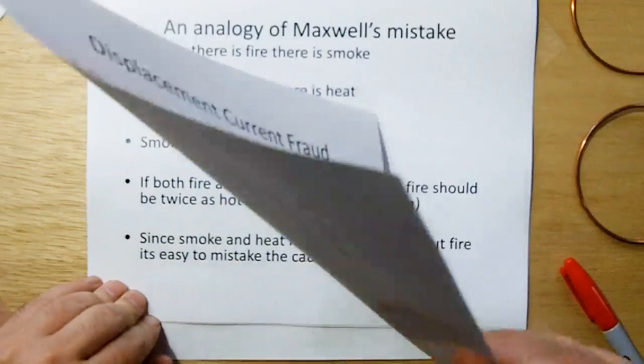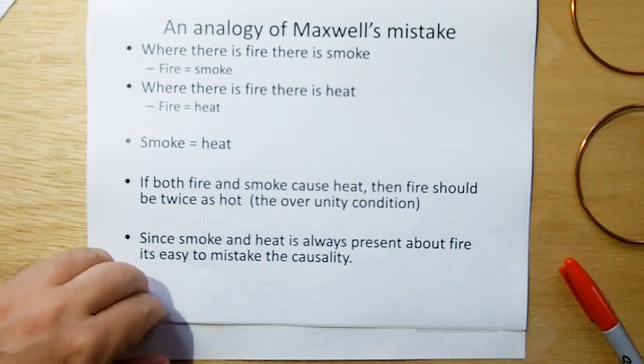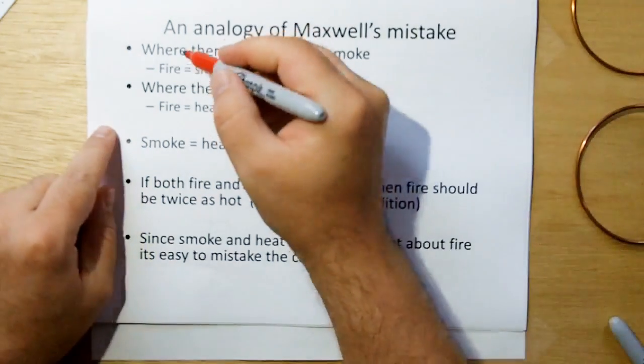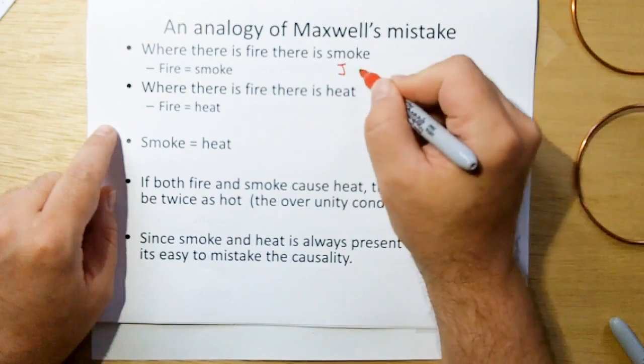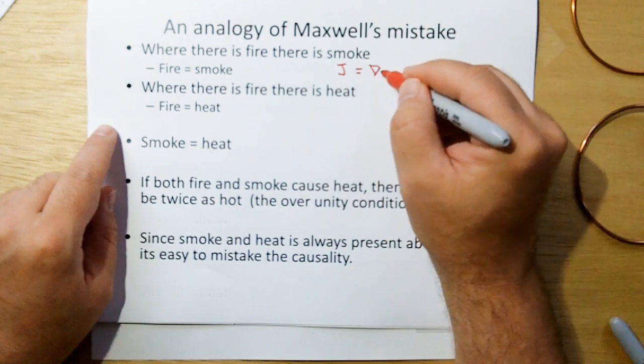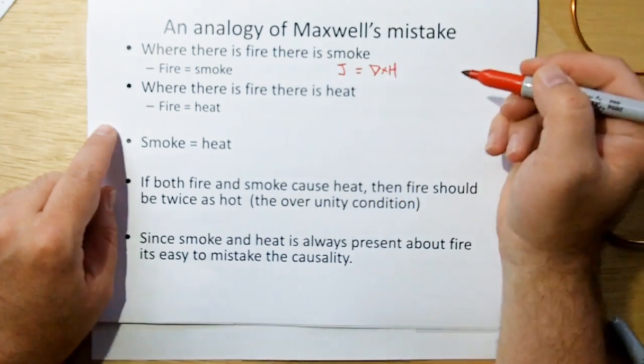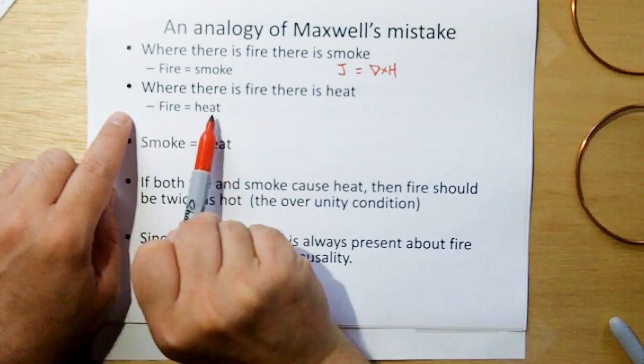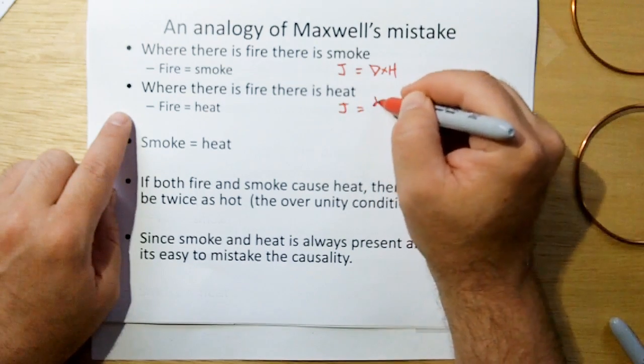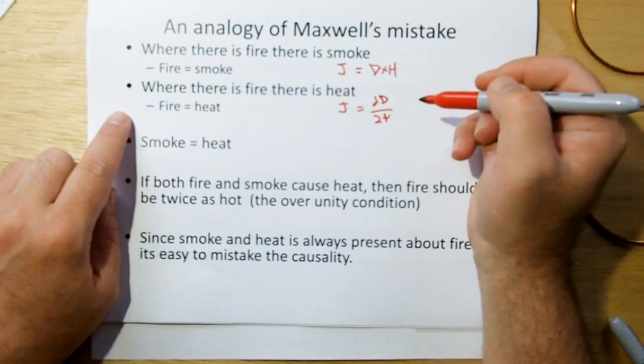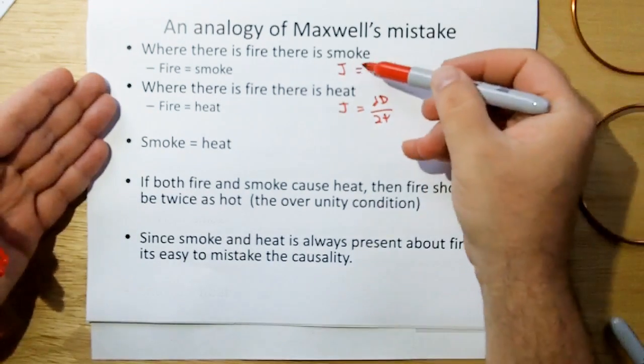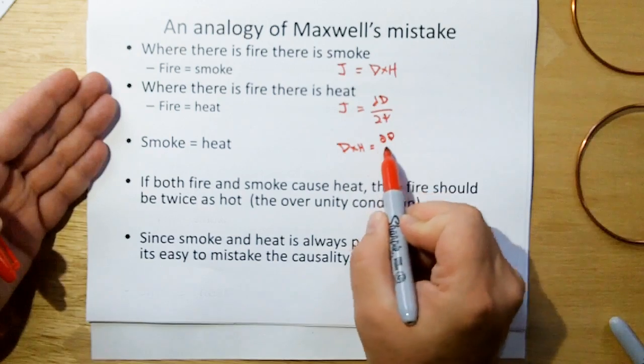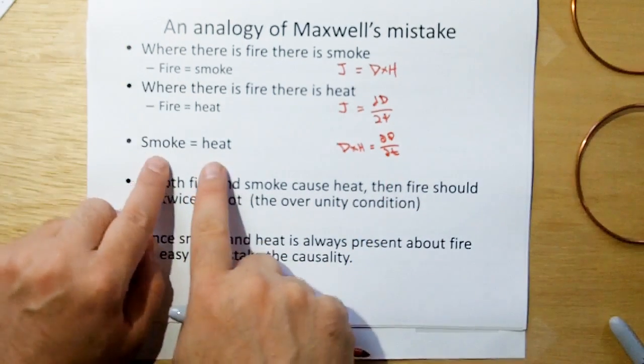And let me show you the next page for an analogy of how Maxwell made the mistake. This is a problem with the mathematics. Let's say we use the analogy of smoke, and fire, and heat. Fire causes smoke, and that's the same thing as saying that J, the current density, makes a magnetic field. And now we can say, where there is fire, there is also heat. So, fire causes heat. And we can also say that J causes dD/dt. So, if we were to do what Maxwell did and put these two equations together, we would get curl cross H equals dD/dt. And that's the same thing as putting these two equations together and saying smoke causes heat.